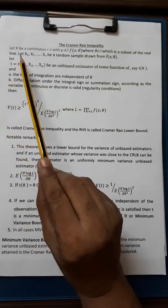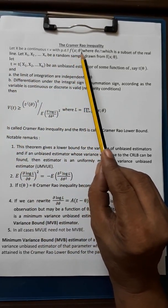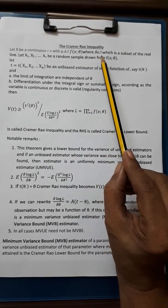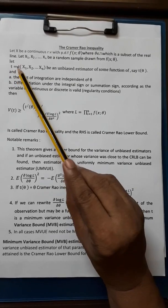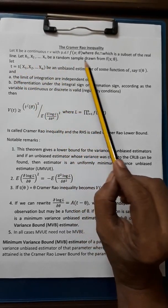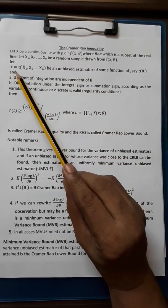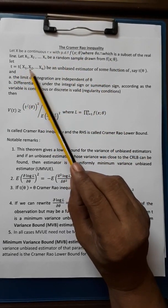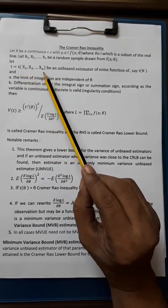Let X be a continuous random variable with PDF f(x,θ) where θ belongs to Ω which is a subset of the real line. Let x₁, x₂, ..., xₙ be a random sample drawn from f(x,θ) and t = t(x₁, x₂, ..., xₙ) is a function of random samples.